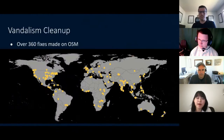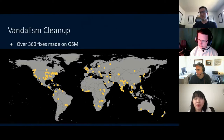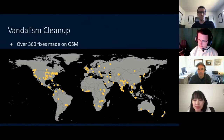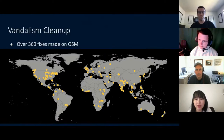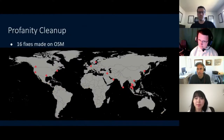But we are not just working on adding data to OSM. We have also actively contributed to fixing improper data on OSM. Especially in the last year, with the improvement of our vandalism and profanity detection techniques, we were able to fix over 360 samples of vandalism and 16 instances of profanities on feature names around the world on OSM.